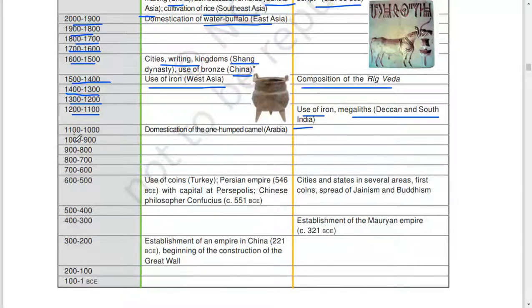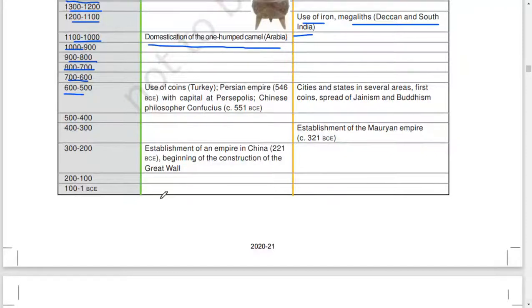1,100 to 1,000: domestication of one-hump camel, Arabia. 1,000 to 900, 900 to 800, 800 to 700, 700 to 600. 600 to 500: use of coins, Turkey. Persian Empire, 546 BCE, with capital at Persepolis. Chinese philosopher Confucius, 551 BCE. Cities and states in various areas. First coins, spread of Jainism and Buddhism.